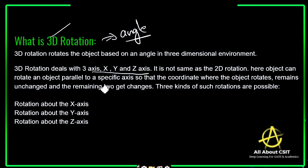3D rotation is not the same as 2D rotation, because here objects can rotate parallel to a specific axis, so the coordinates of the axis the object rotates about remain unchanged while the remaining two change. In 3D rotation, whatever axis the object is rotating about, that axis coordinate remains the same — only the remaining two coordinates change.